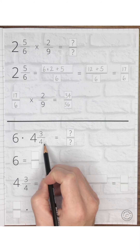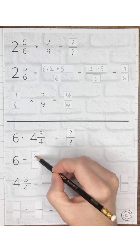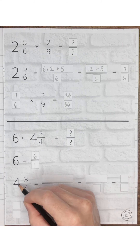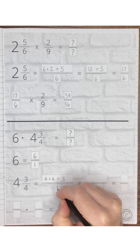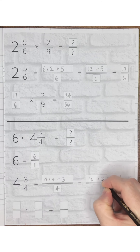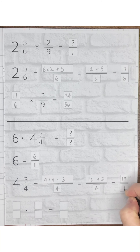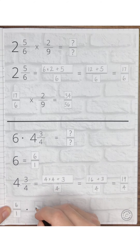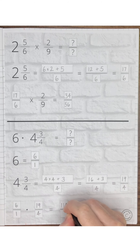Now: 6 times four and three-fourths. First, convert the whole number to a fraction by putting it over 1. Then convert the mixed number to an improper fraction: multiply the denominator by the whole number and add the numerator — denominator stays the same. 4 times 4 is 16, plus 3, over 4. Sixteen plus 3 is nineteen-fourths. So we have six over one times nineteen over four. 6 times 19 is 114, and 1 times 4 is 4.